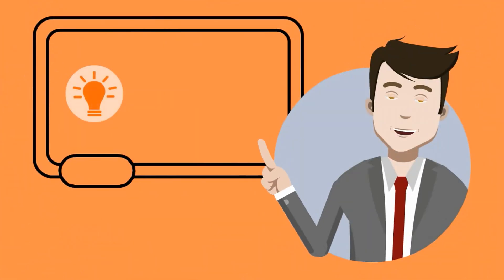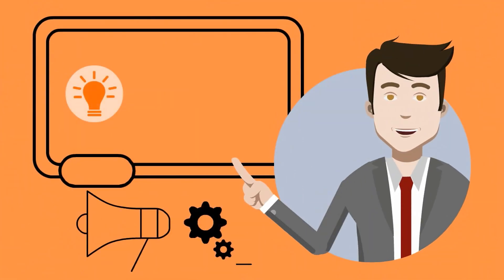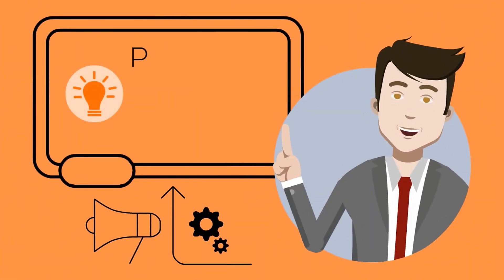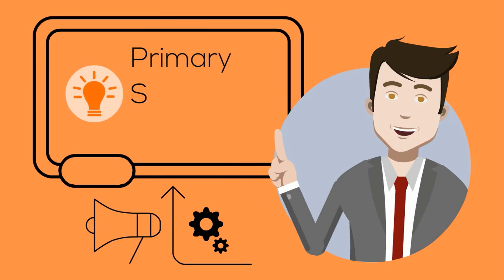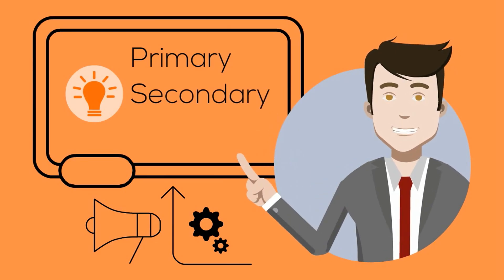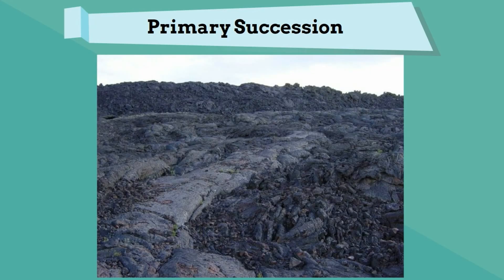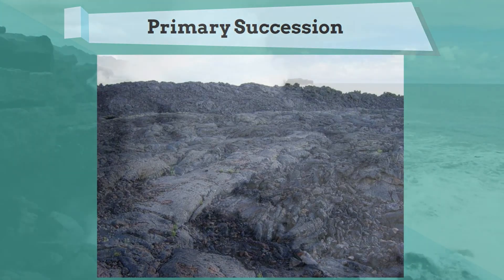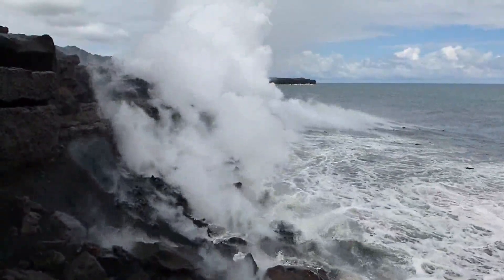There are two main types of succession: primary and secondary. Primary succession occurs in new areas that have little or no soil. For example, new islands can be created from lava flows. Take a look.